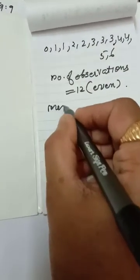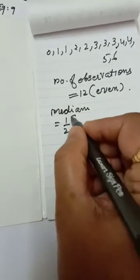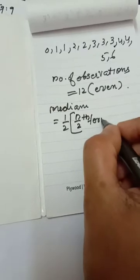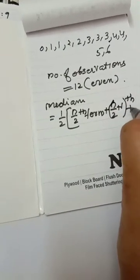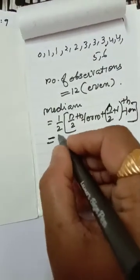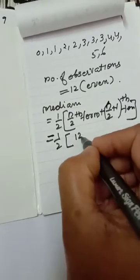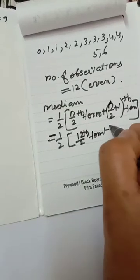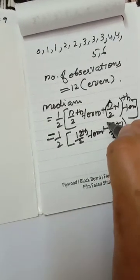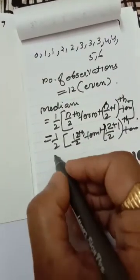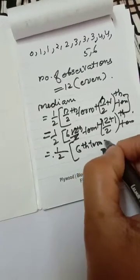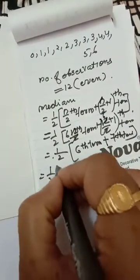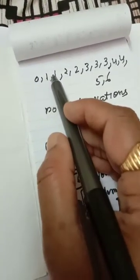For an even number of observations, the median formula is: (1/2) × [value at (n/2)th term + value at (n/2 + 1)th term]. With n = 12: n/2 = 6, so the sixth term, plus 6 + 1 = seventh term. Median = half of (sixth term + seventh term). The sixth term is 3 and the seventh term is also 3, so median = (3 + 3) / 2 = 3.